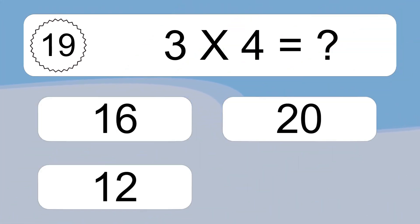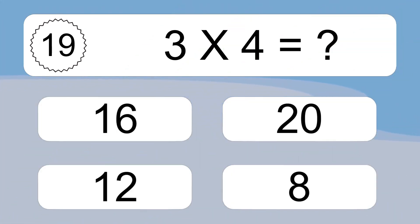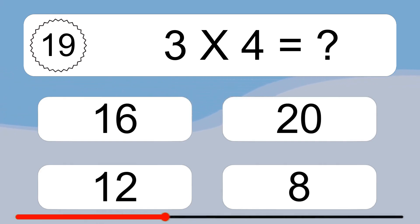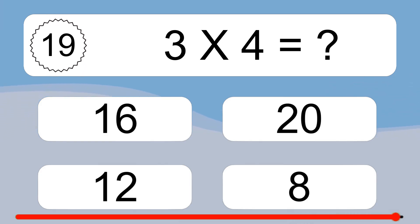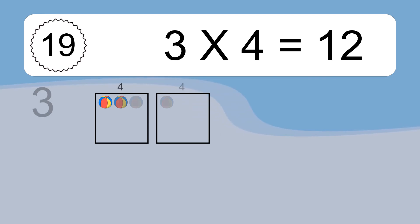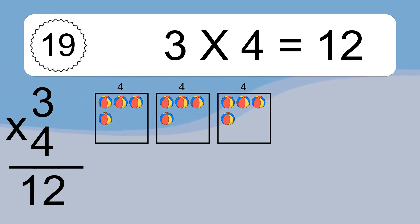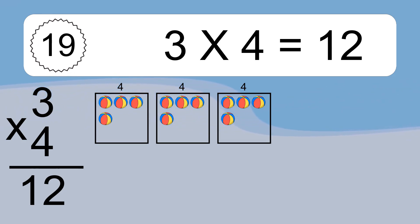3 times 4 equals what? 3 times 4 equals 12. We have 3 boxes, and each box has 4 colorful balls inside. If you count all the balls in all the boxes together, you will have 3 times 4 balls. This equals 12 balls.